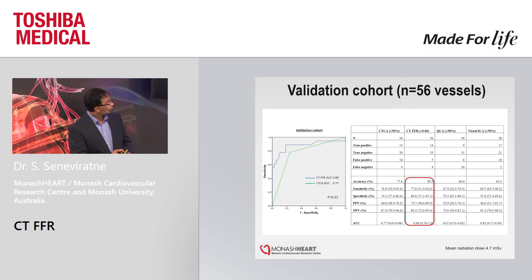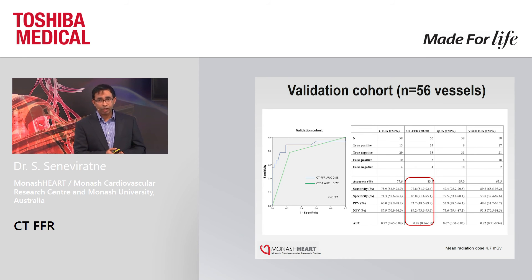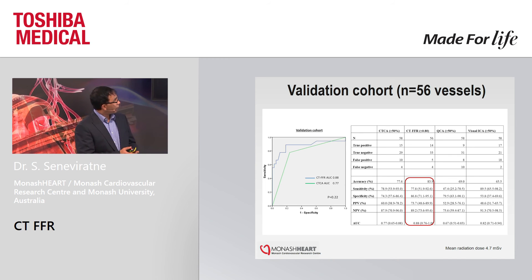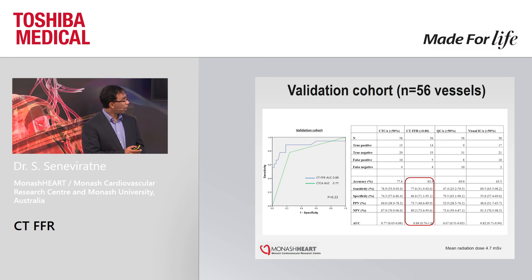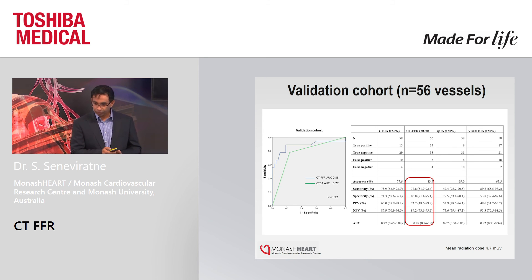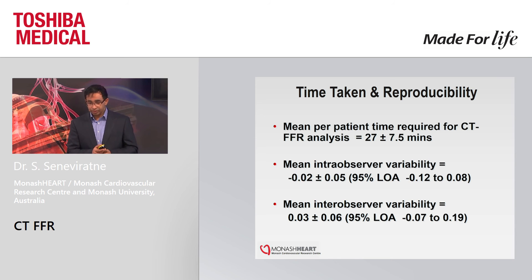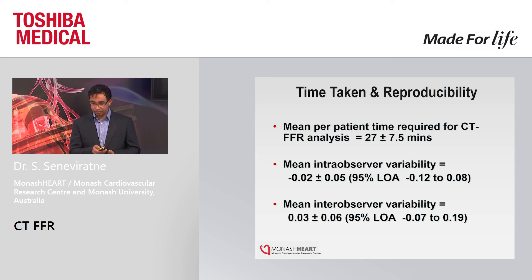In the validation cohort of 56 vessels, sensitivity with cardiac CT is around 78-79%, and sensitivity is maintained when applying CT-FFR at around 78%. However, the specificity improved from about 74% up to 87%. As a result, the area under the curve goes from 0.77 with CT to 0.88 on CT-FFR. This is not statistically significant, most likely due to the relatively small sample size. There is a higher radiation dose of 4.7 millisieverts, though this study also included a calcium score not strictly required for this technique. Mean per-patient time was about 27 minutes, with excellent intra- and inter-observer variability, making the technique highly reproducible.